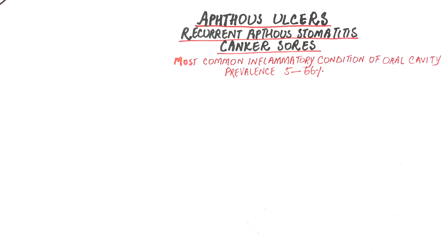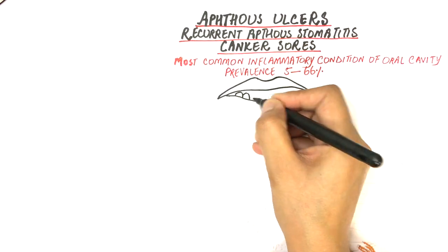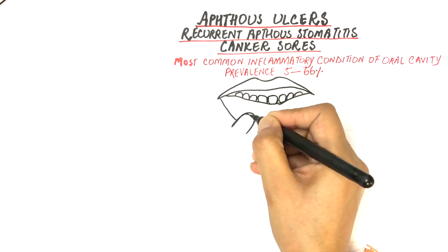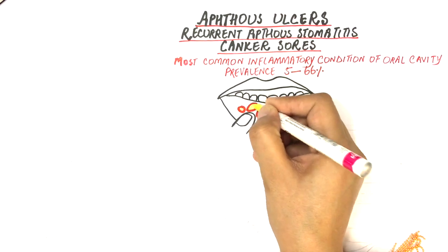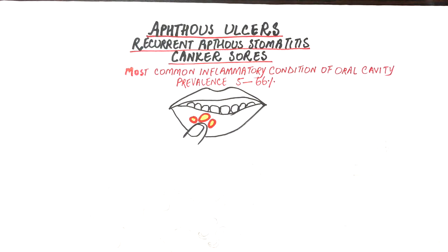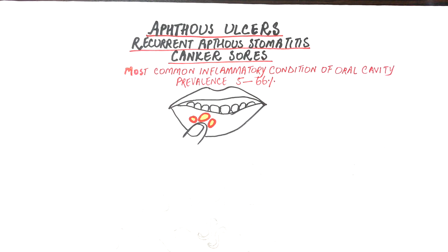It typically starts in childhood or adolescence as small recurrent round or ovoid ulcers with well-defined erythematous margins and a central yellow or grey floor. The lesions have a recurrent nature, meaning that they are episodic once they appear for the first time in an individual's mouth.